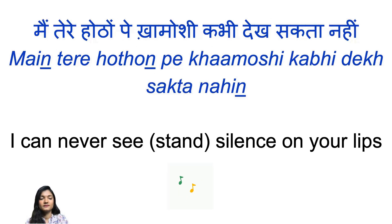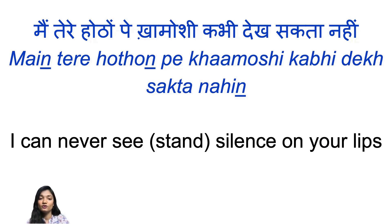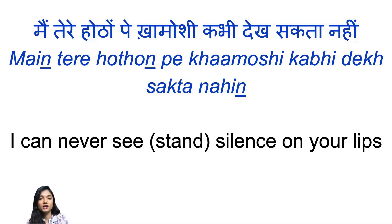Main tere hontho pe khamoshi kabhi dekh sakta nahi. Hontho means lips, and just like aankhon, it is followed by a preposition, so it becomes hontho pe — on your lips. Pe is the shortened form that is very prevalent in spoken Hindi; instead of par you can say pe. So hontho par is the same as hontho pe.